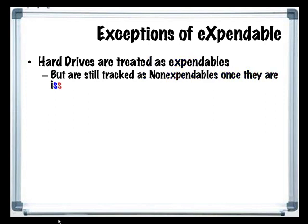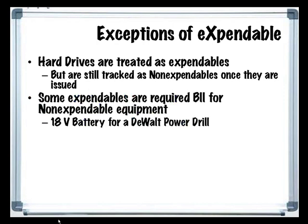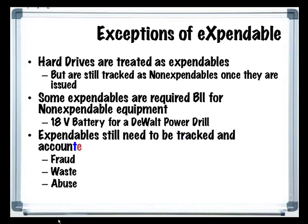Some exceptions and notes on expendable items: within this database, hard drives are treated as expendables but are tracked as non-expendables once they are issued. Some expendables in the Army are required BII for non-expendable equipment, such as an 18-volt battery for a DeWalt power drill. Expendables still need to be tracked and accounted for to properly prevent fraud, waste, and abuse.